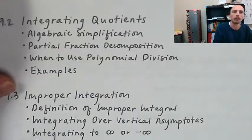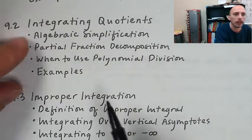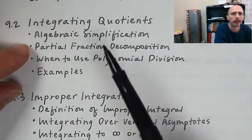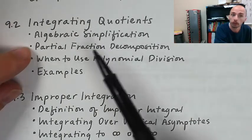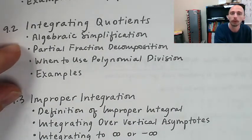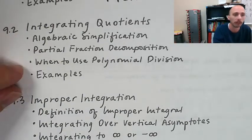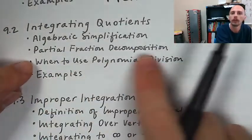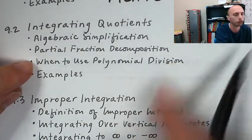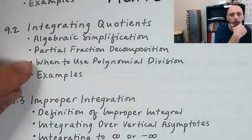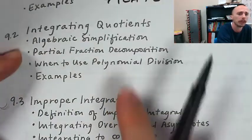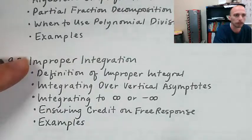The next day we did integration of quotients. We started with algebraic simplification. We learned when to do partial fraction decomposition - when the denominator was a degree 2 polynomial that was factorable and the factors were distinct. And we learned when to use polynomial division, when it was bigger on top and probably the denominator was just like x plus a number or x minus a number.